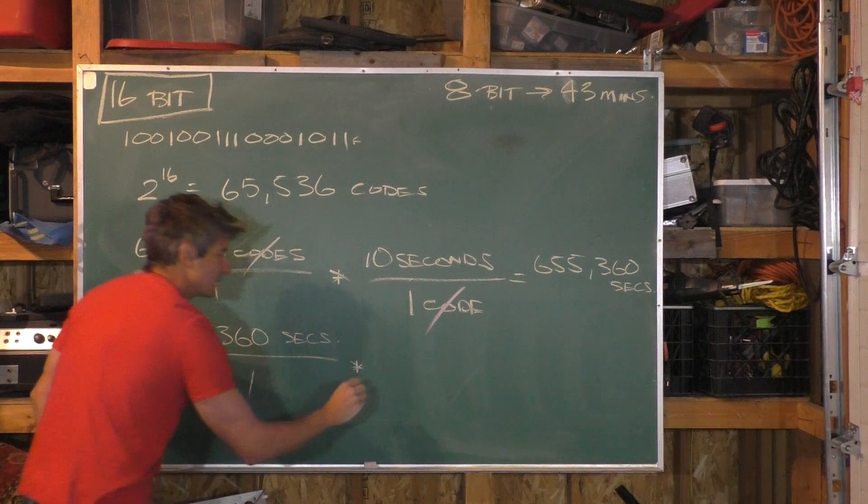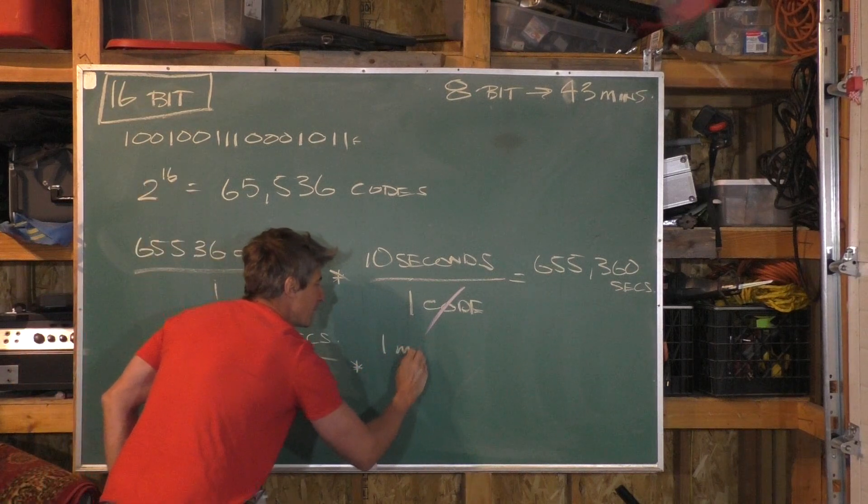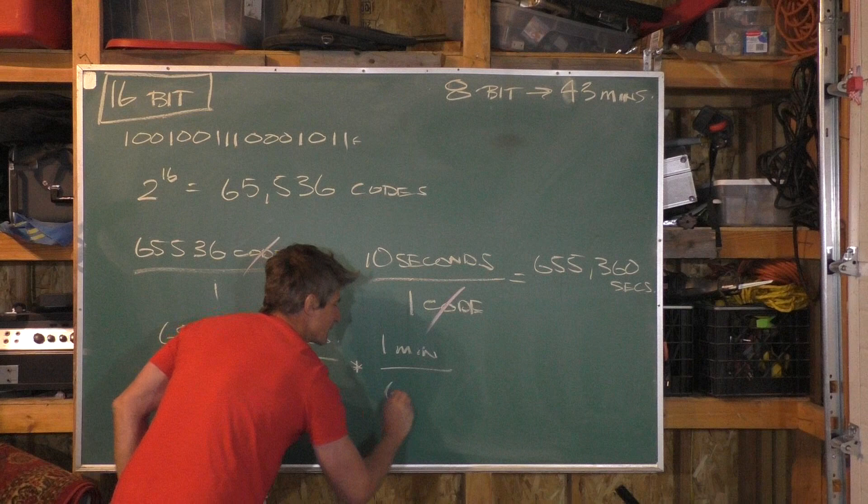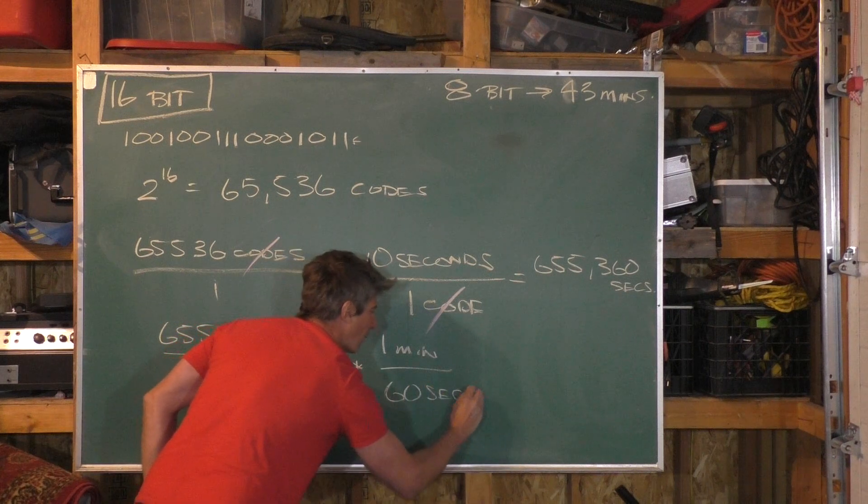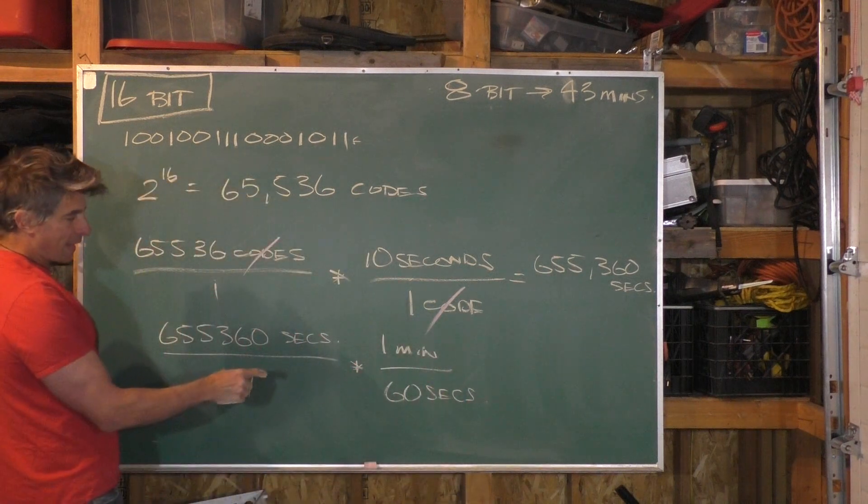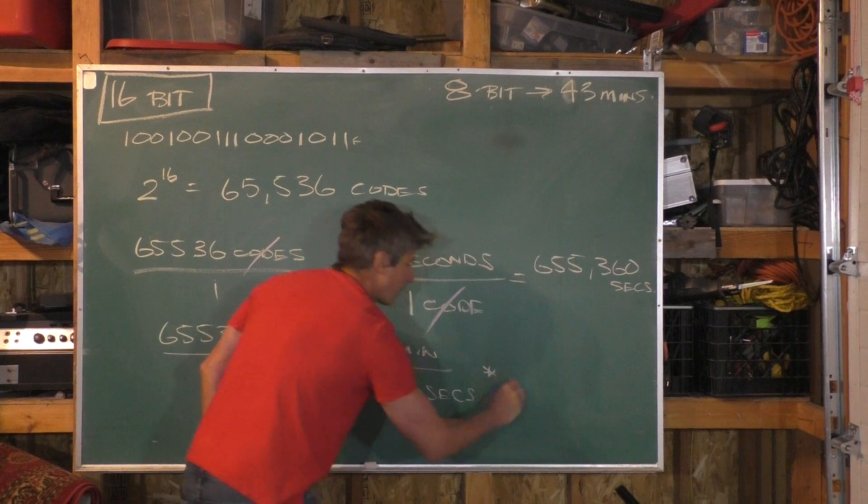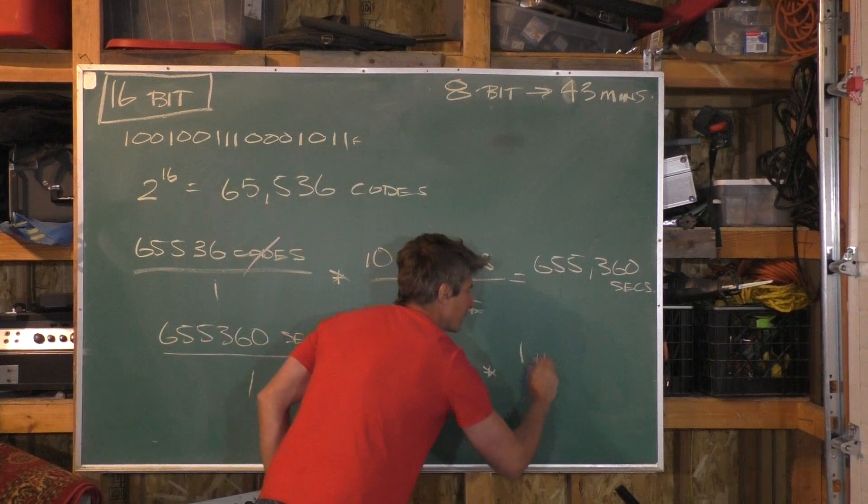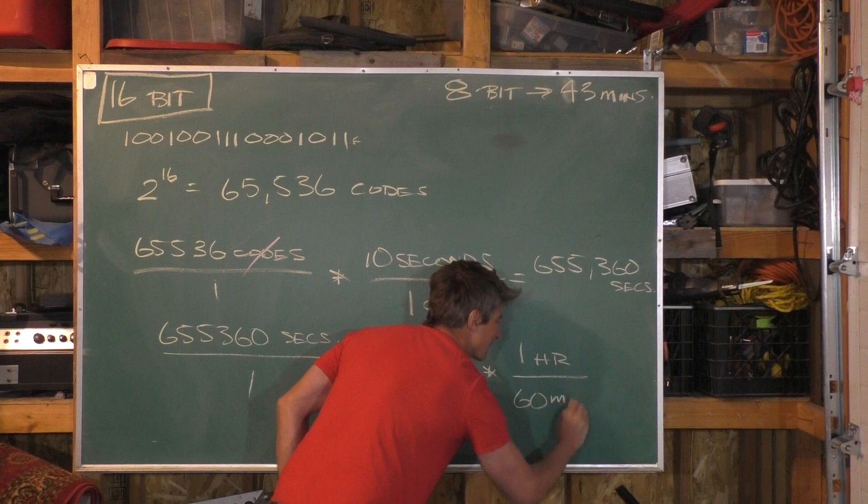So one minute is 60 seconds. And then we're going to convert minutes to hours because one hour is 60 minutes.